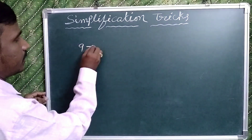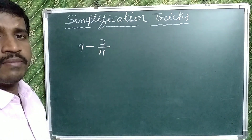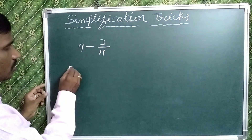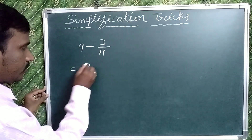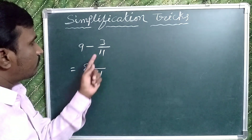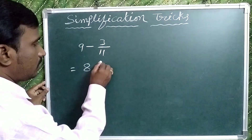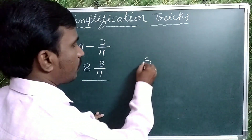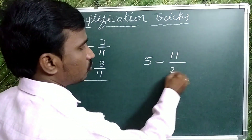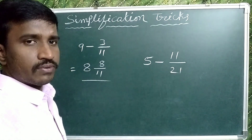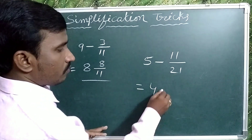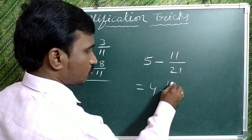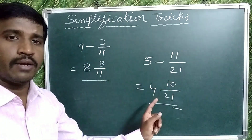Take another example: 9 minus 3 by 11. It is a whole number and a proper fraction with minus. Write the number before 9, which is 8. Denominator is 11. What is the difference between 11 and 3? 11 minus 3 equals 8. So the answer is 8 and 8 by 11. Another example: 5 minus 11 by 21. The number before 5 is 4. Denominator is 21. The difference between 21 and 11 is 10. So the answer is 4 and 10 by 21.